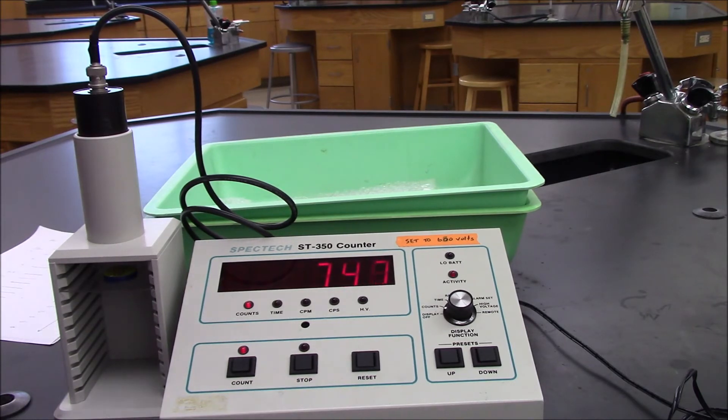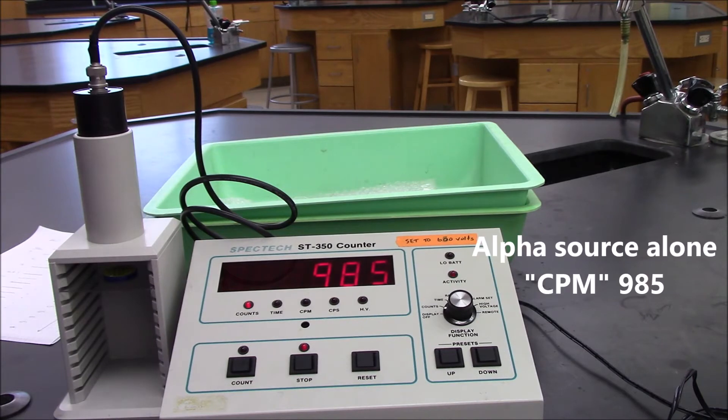You can see we're going to get close to a thousand counts in a minute, and that way it'll be very easy to see if we can block them with various materials. So we got 985 counts. What you'll have to do is subtract the background from that to get the net counts per minute or net CPM.